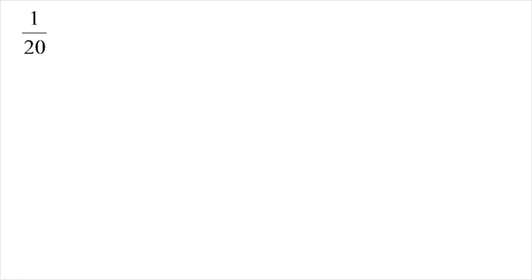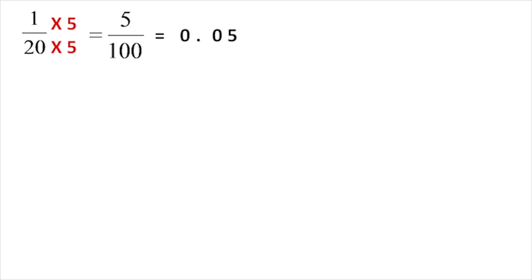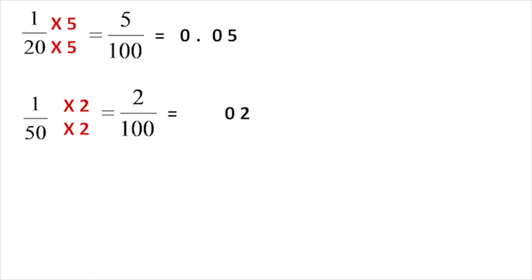For 1/20, we need to convert the denominator to 100. If we multiply 20 by 5, we get 100, so 1/20 = 5/100. The denominator has 2 digits, so we get 2 decimal places. Adding a leading zero, the result is 0.05.